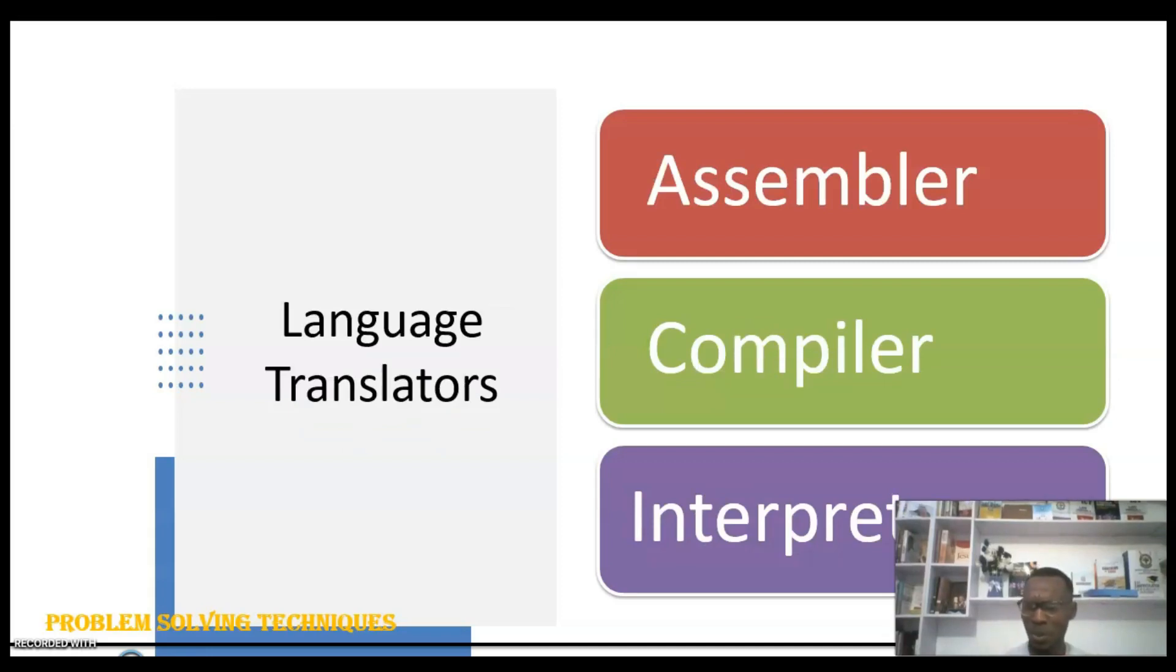After these languages have been written, sometimes computers don't understand them. The computer knows about zeros and ones, which is machine language. So we need a language translator that helps us to translate the language from high-level language to machine language, or low-level language. These translators come in several forms: we have the assembler, we have the compiler, we have the interpreter.